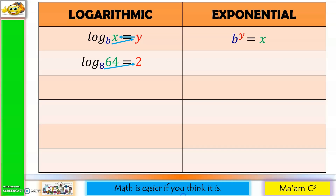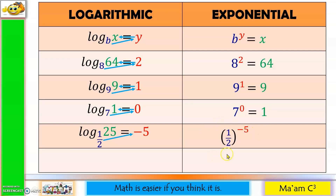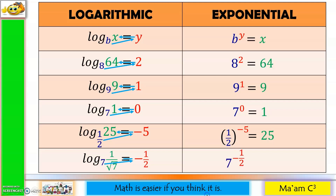For example: 8 raised to 2 equals 64. One more: 9 raised to 1 equals 9. Another: 7 raised to 0 equals 1. One more: (1/2) raised to negative 5 — be careful here, enclose it in parentheses, otherwise only 1 is raised to negative 5 — equals 32. Last one: 7 raised to negative 1/2 equals 1 over the square root of 7.